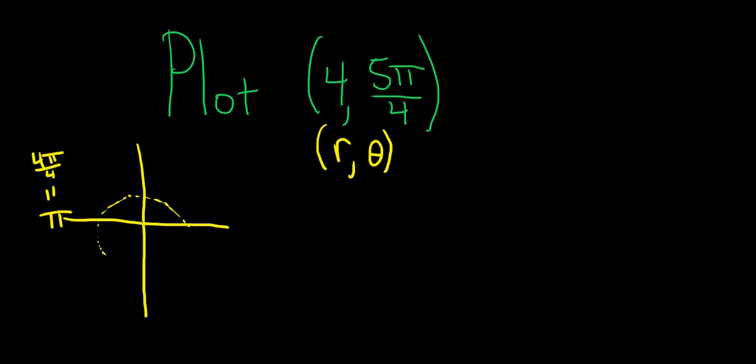And then r is 4, so you travel a distance of 4 from the origin to the terminal point of your angle. So right there, there's our polar coordinate. Again, first you travel a distance of 5π over 4. And because r is 4, you just go straight out there. And boom, there it is. And this distance here is 4.